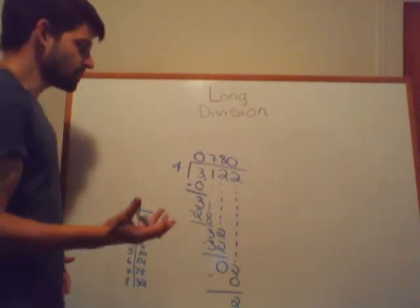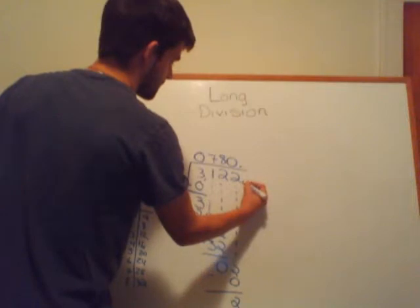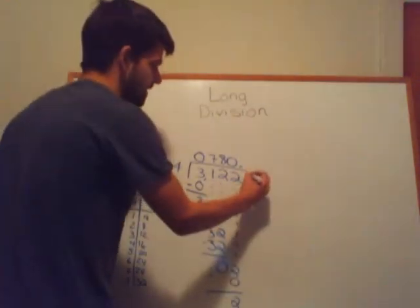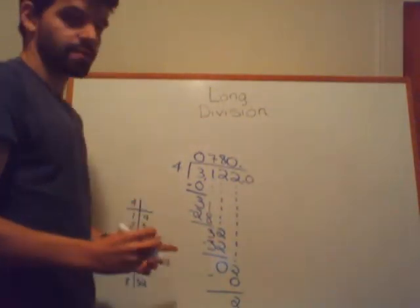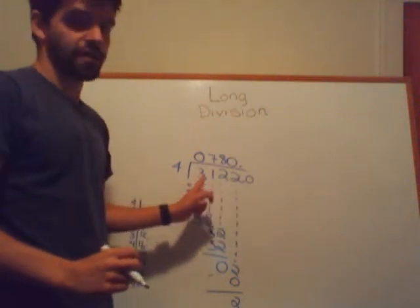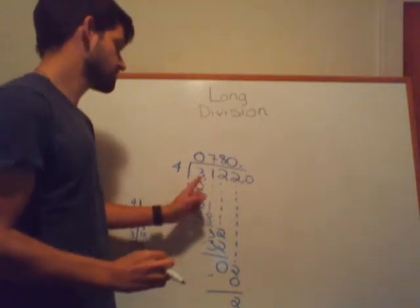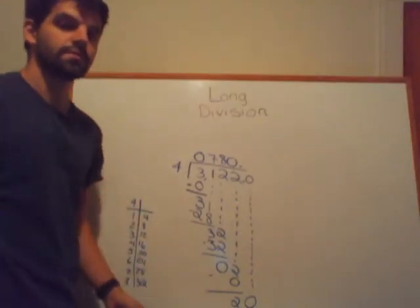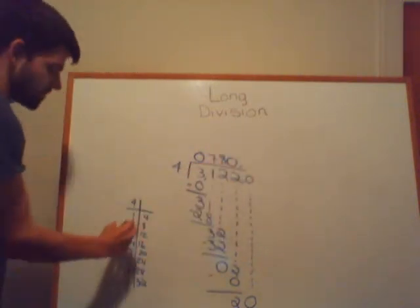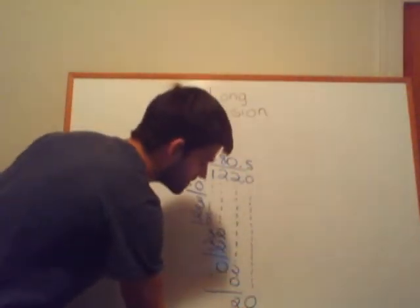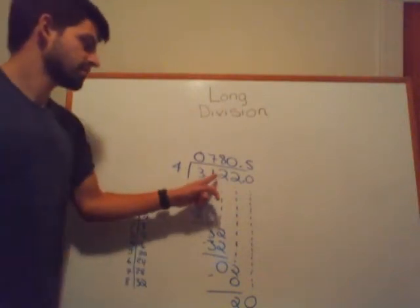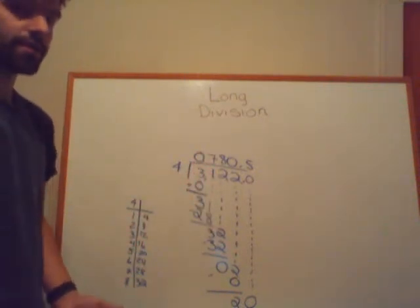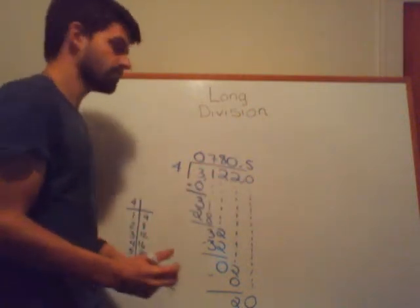Here's what we do next: insert a decimal into both the quotient we have so far and the original dividend. This allows us to add a 0 to the original dividend — keep in mind I haven't changed the number, since 3,122 is the same as 3,122.0 — but it lets me bring down another 0. So instead of figuring out how many times 4 goes into 2, now I'm figuring out how many times 4 goes into 20. From our table, 4 goes into 20 five times. This tells us that 4 can go into 3,122 evenly; the quotient is just not a whole number, and that's perfectly okay.